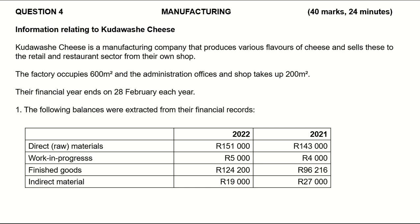Let's start with question four, which is the last question in this paper on manufacturing — 40 marks, 24 minutes. The information relates to Kudawashi Cheese, a manufacturing company that produces various flavors of cheese and sells these to retail and the nurturing sector from their own shop. The factory occupies 600 square meters, and the administration offices and shop take up the remainder — 200 square meters. Their financial year ends on the 28th of February each year, and the following balances were extracted from their financial records.